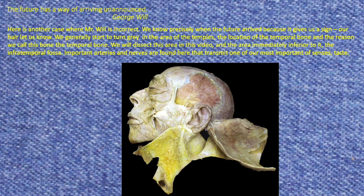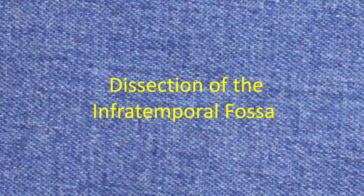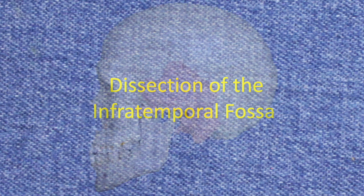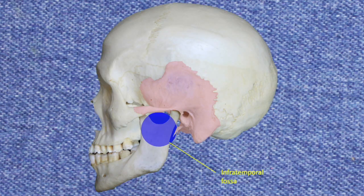Important arteries and nerves are found here that transmit one of our most important senses, taste. The infratemporal fossa is the space that is below the temporal bone and deep to the ramus of the mandible. Many important nerves and vessels traverse this space.